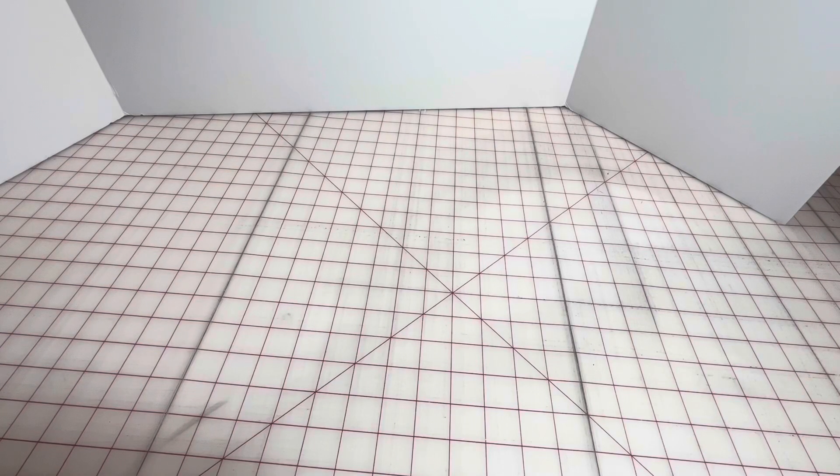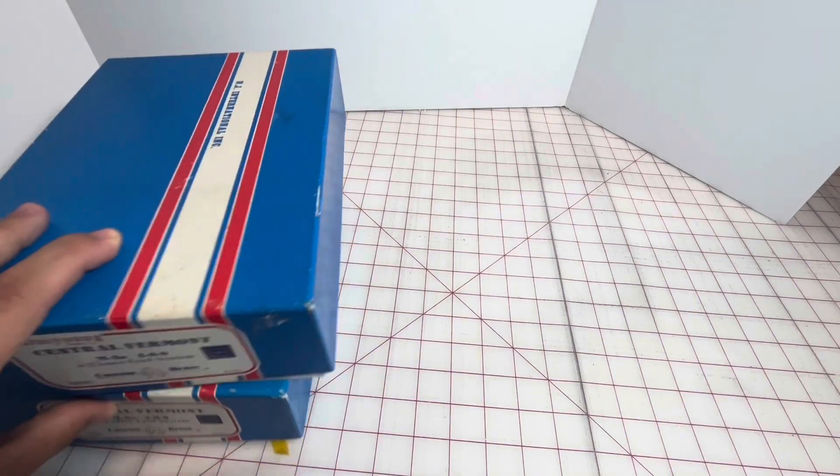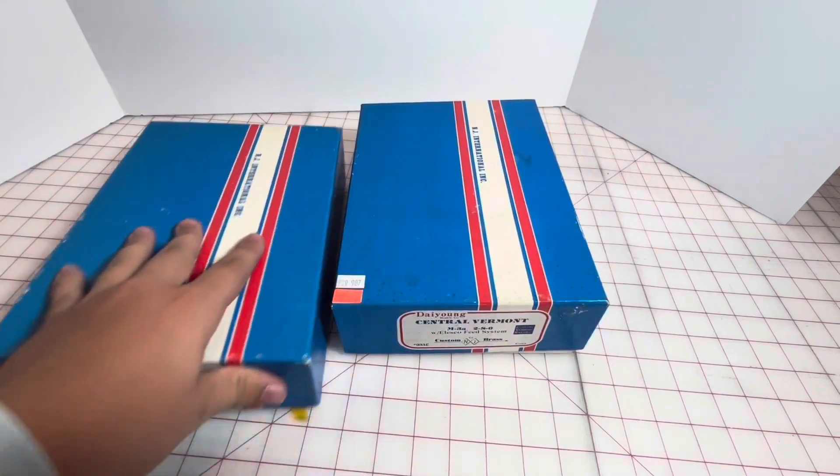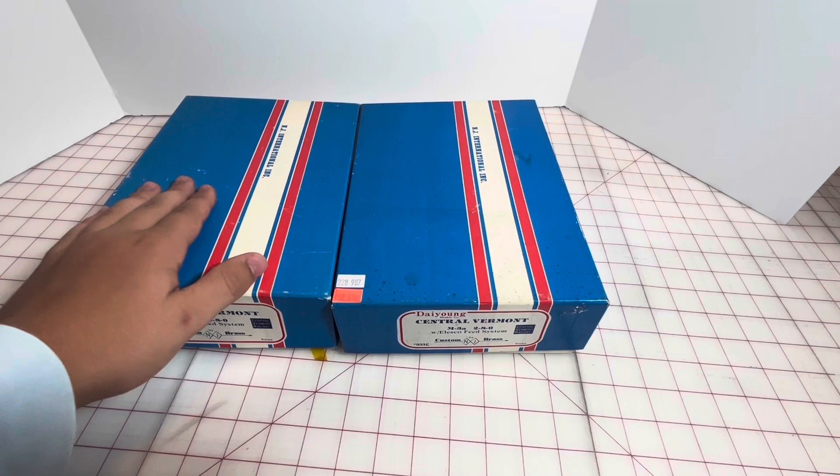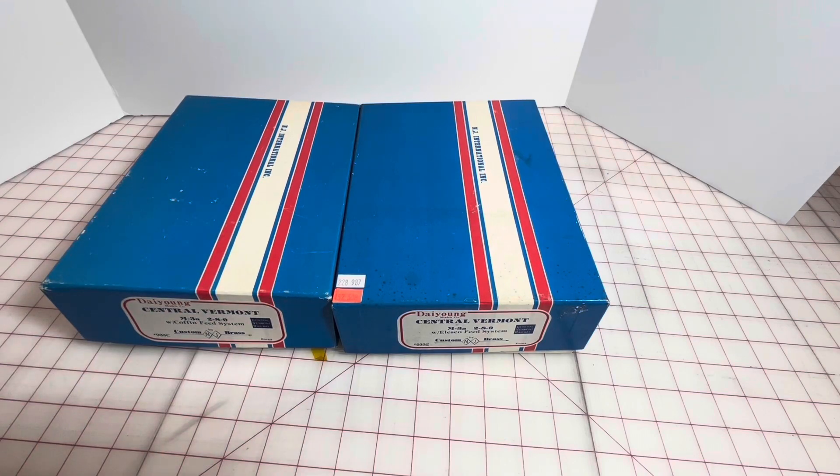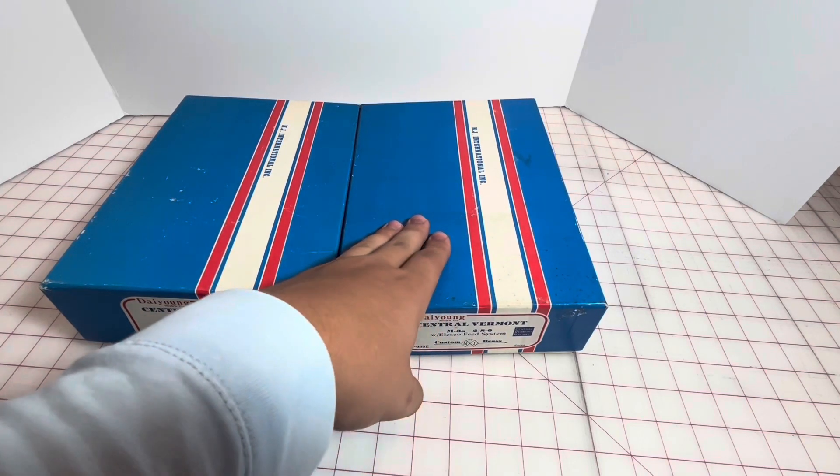Hey guys, in today's video I want to show you two brass engines that I just got. These are the Central Vermont 2-8-0s by NJ Custom Brass, the M3A version. This one right here is the coffin feed water heater which has a bit more detailing, and then this is the Alesco feed water heater.